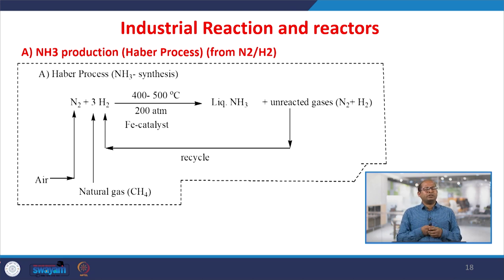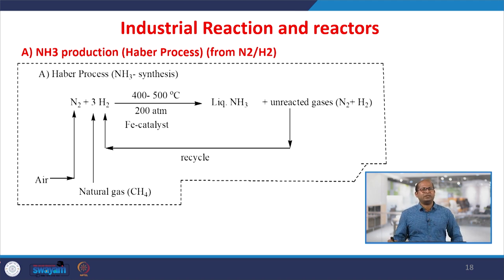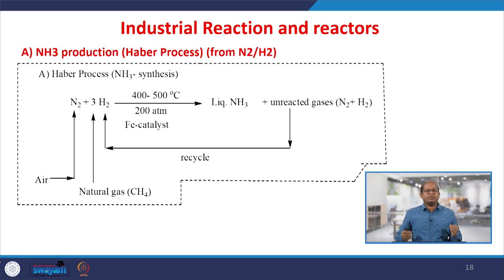Now discussing ammonia production: nitrogen and hydrogen are the starting materials. In a particular reactor, we should maintain a temperature of 400 to 500°C and high pressure of 200 bar. We use an iron-based catalyst to get the final product, ammonia. Conversion may not be 100% or complete — some unreacted reactant may be left in the reactor, and we have to separate it out in a separator and recycle it back to the feed stream.